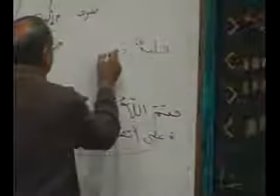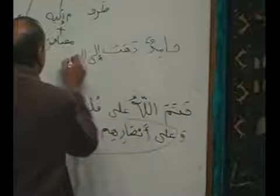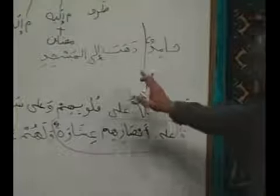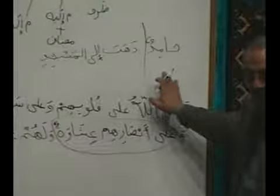Khabar can be jumlah feliya. Sister Maimunah: Hamidun zahaba il-masjid. Okay, brothers and sisters. Hamidun — what is Hamidun? Where is the khabar? Jumlah feliya. What is the news about Hamidun? He went to the masjid. What is zahaba? Fial. There is the fail. You got your fial and fail. And el-masjid? Jar majroor. So, jumlah feliya is coming as a khabar for Hamidun.